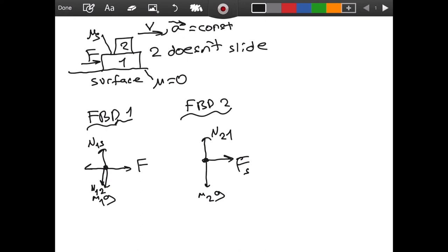And of course, from Newton's third law, we know that if one is exerting a force of static friction on two, then two is exerting the same force, equal in magnitude, but opposite in direction on block one. So we have drawn this.